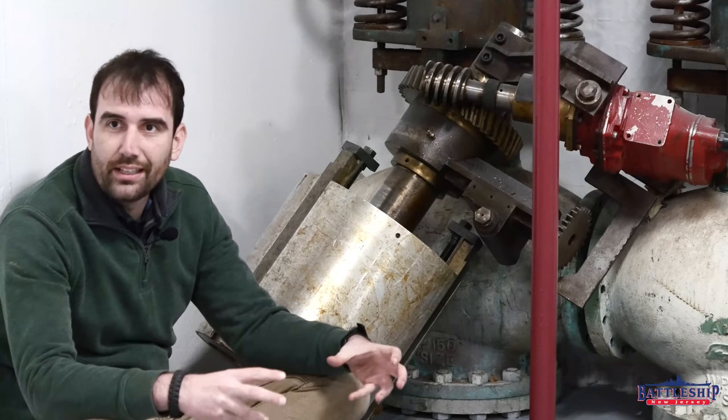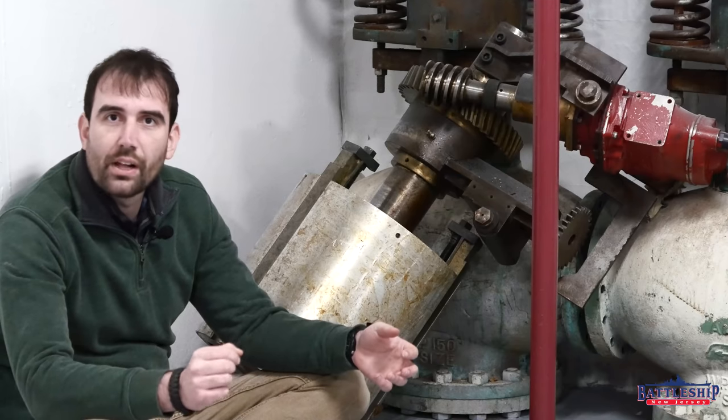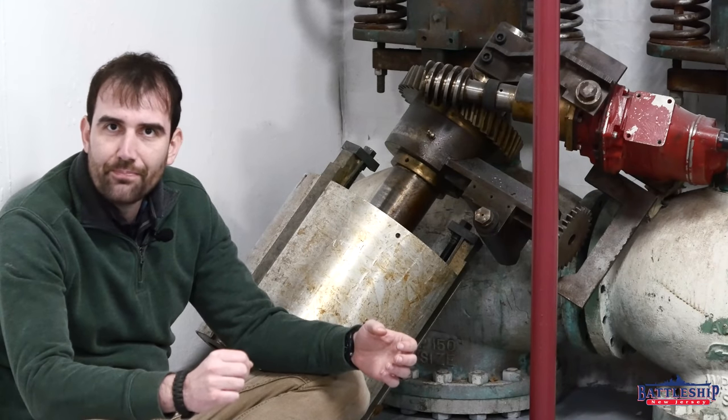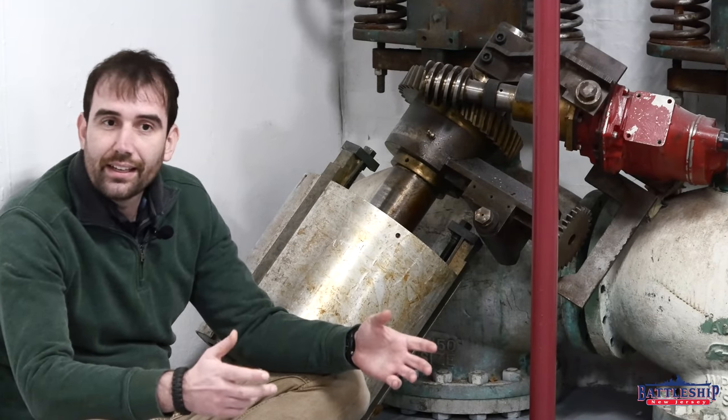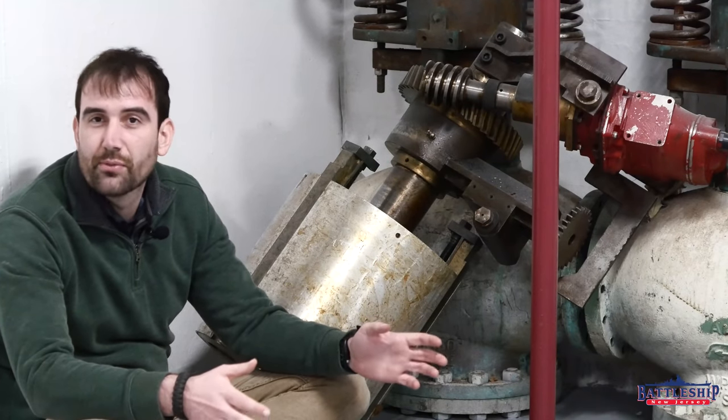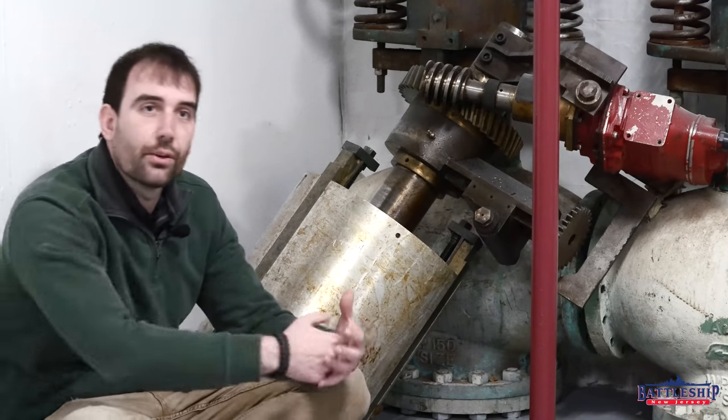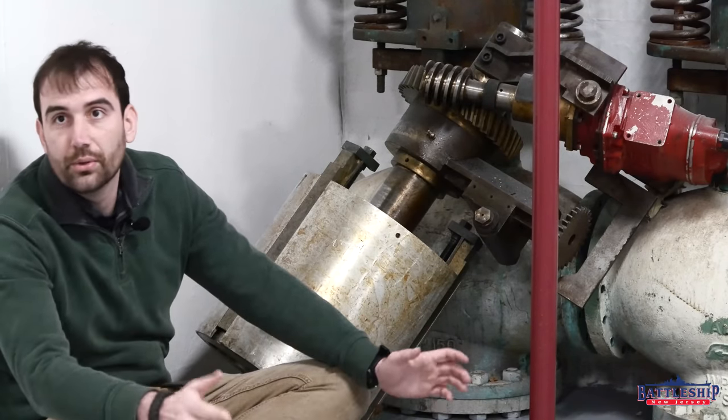The innermost sleeve is the one that has the rifling on it. It's a relatively thin sleeve and the idea is that when you've worn out the rifling, as designed, you could shoot about 300 shots through it before the rifling wears out. Then you could pull that sleeve out and put another one in without having to make a whole new gun barrel.